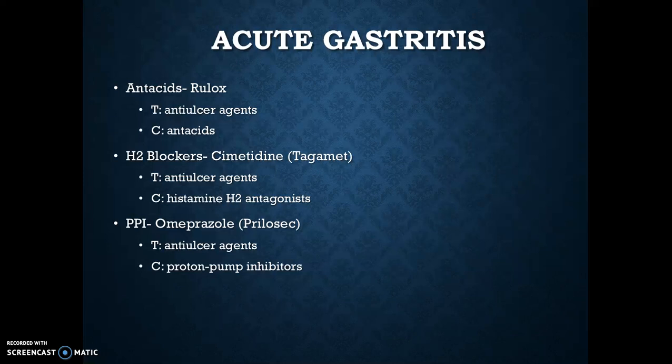The last medication is omeprazole, or Prilosec. The therapeutic class is an anti-ulcer agent and the chemical class is a proton pump inhibitor. It binds to an enzyme on gastric parietal cells in the presence of acidic gastric pH, preventing the final transport of H+ ions into the gastric lumen. Use cautiously in patients with liver disease, giving them a lower dosage. Safety is not established in pregnant or breastfeeding women. A dosage would be 40 mg once daily for four to six weeks, prescribed differently for critically ill patients.